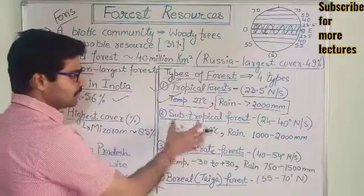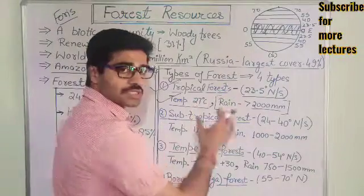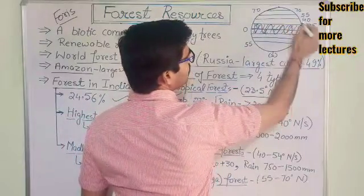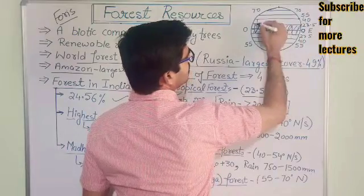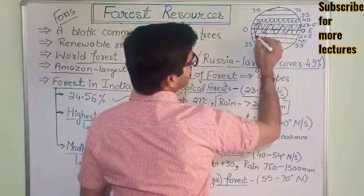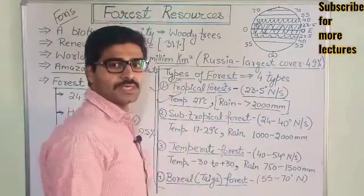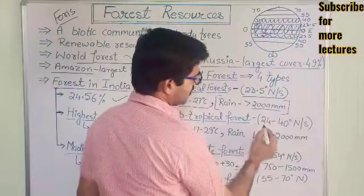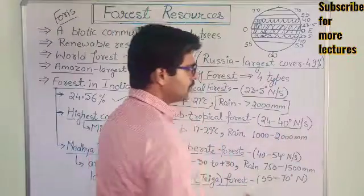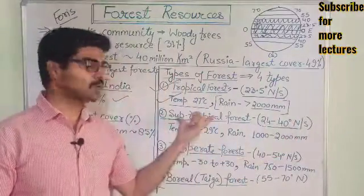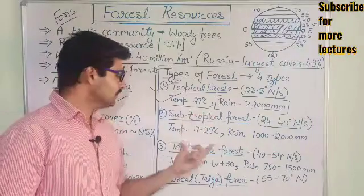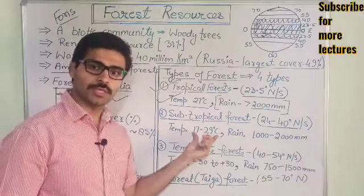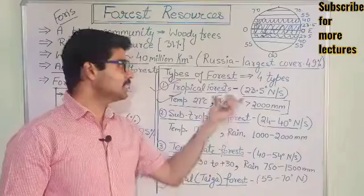The second category of forest is subtropical forest. Subtropical forests are found from 24 degrees to 40 degrees latitude, in both the northern and southern hemispheres. The temperature here ranges from 17 to 29 degrees throughout the year.